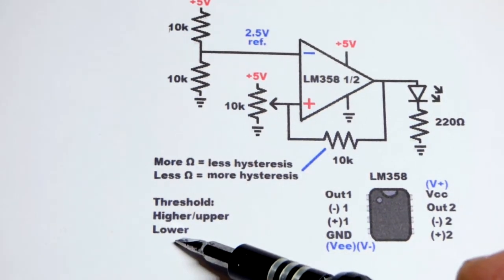And then I had to turn the trim pot down a certain distance for the output to go low. That was the lower threshold.